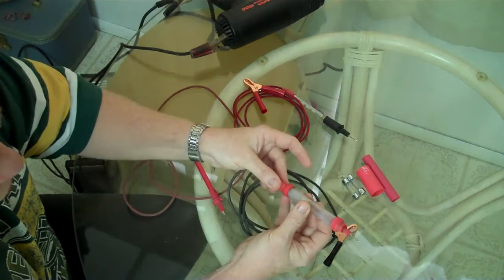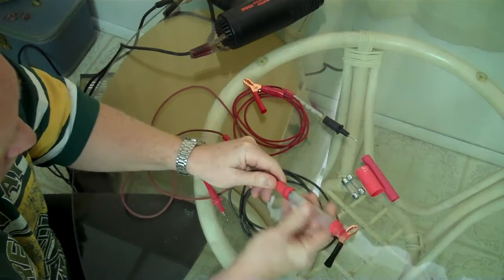And then I used a heat gun and shrunk this heat shrink down, and it's really sturdy. It makes a really sturdy test light, and this is practically unbreakable.